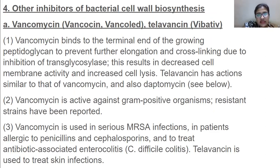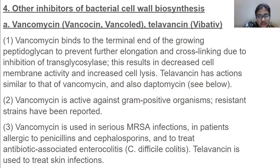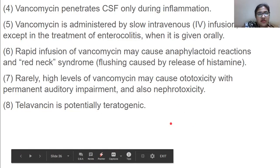Other inhibitors of bacterial cell wall biosynthesis include vancomycin and telavancin. Vancomycin binds to the terminal end of the growing peptidoglycan to prevent further elongation and cross-linking due to inhibition of transglycosylase, resulting in decreased cell membrane activity and increased cell lysis. Vancomycin is active against gram-positive organisms, though resistant strains have been reported. It is used in serious MRSA infections and in patients allergic to penicillin and cephalosporins, and to treat antibiotic-associated enterocolitis.